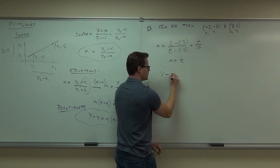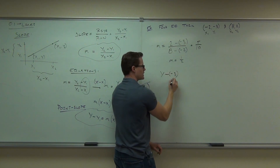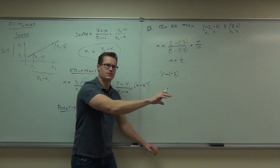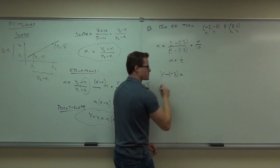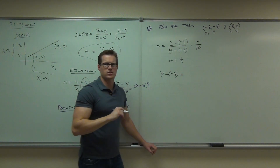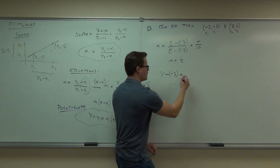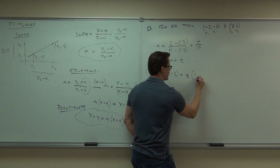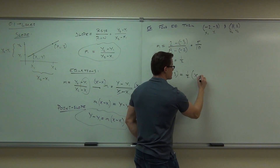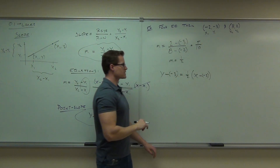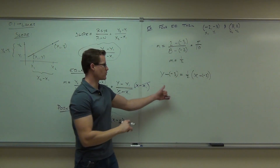Minus negative three. I'm going to use some parentheses since that's a negative number in there. Equals — I'm supposed to have my M. What's my M? One half. And X? Minus negative three. Let's clean this up just a little bit.